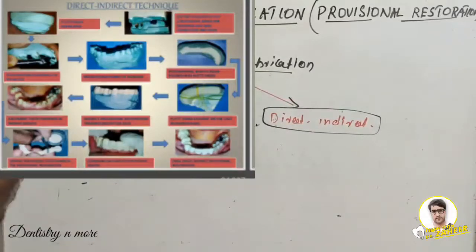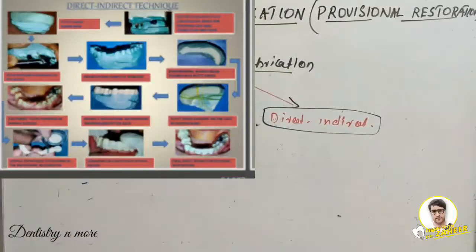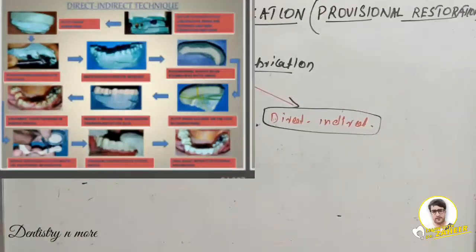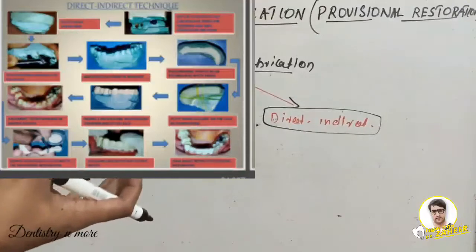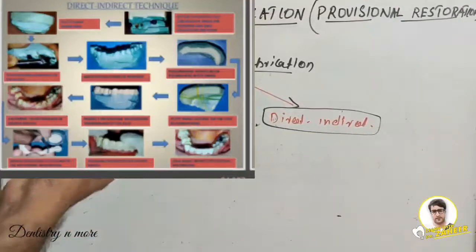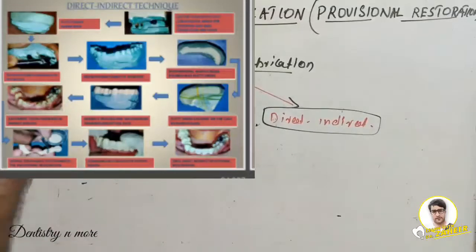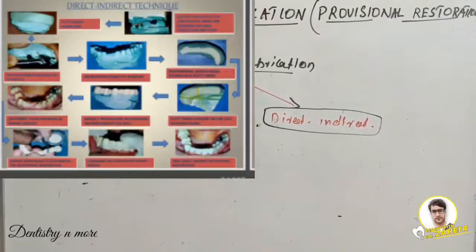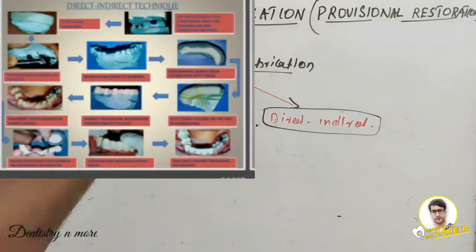In the combination direct-indirect method, some procedures take place on the cast and some in the patient's mouth. On the diagnostic cast, edentulous areas are restored and wax corrections are done; a putty index is created and tooth preparation is done on the cast. Polymerizing acrylic resin is poured into the index, secured on the cast with a rubber band, and the indirect provisional restoration is trimmed and fitted on the cast. Then the abutment teeth are prepared in the patient's mouth, acrylic resin is added to the retainer in the provisional restoration, and it is placed in the patient's mouth — combining both direct and indirect processes.